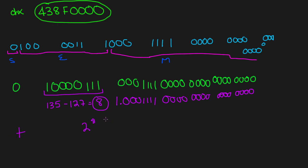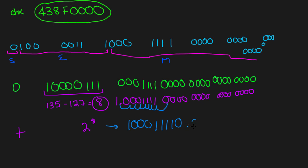We have 2 to the eighth, we know it's a positive number, and we need to denormalize the mantissa by moving the decimal point eight spaces to the right. Counting one through eight, after doing that the number looks like 1000111110 followed by trailing zeros — this is the binary decimal representation.